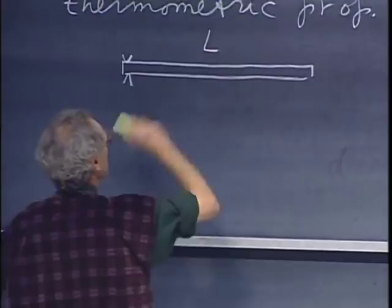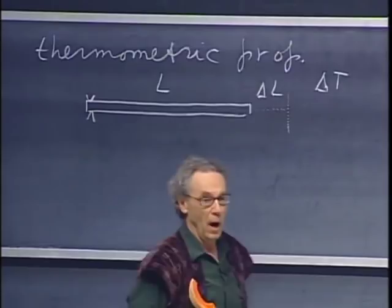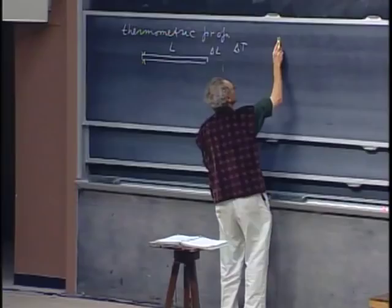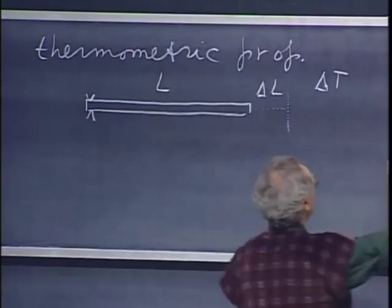And so you can define a temperature scale by looking at the length of an object. For instance, here is a bar of some material. It has length L. I increase the temperature by an amount delta T, and it gets longer by a certain amount delta L. I could put the whole thing in melting ice, and I could say, aha, the length then is L1.